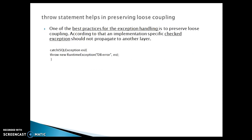When we talk about the throw statement, the throw statement helps in preserving loose coupling. One of the best practices for exception handling is to preserve loose coupling. According to that, an implementation of a specific checked exception should not propagate to another layer. For example, in an MVC application with a controller, service, and DAO layer, there is a possibility in your DAO layer you can get a SQLException, but we should not propagate that SQLException to the higher service layer as-is.